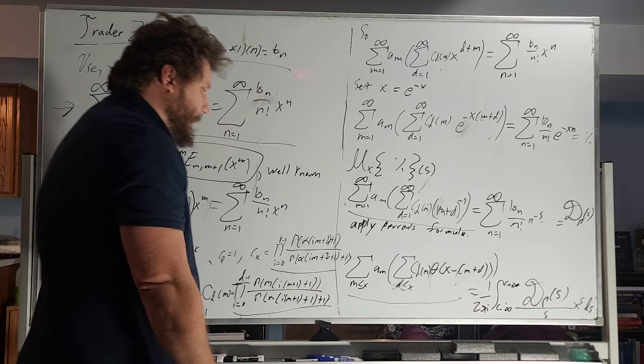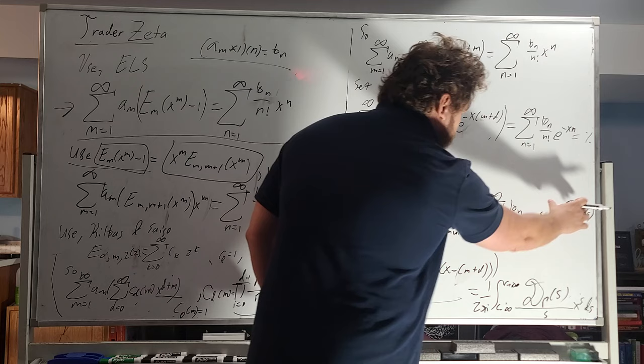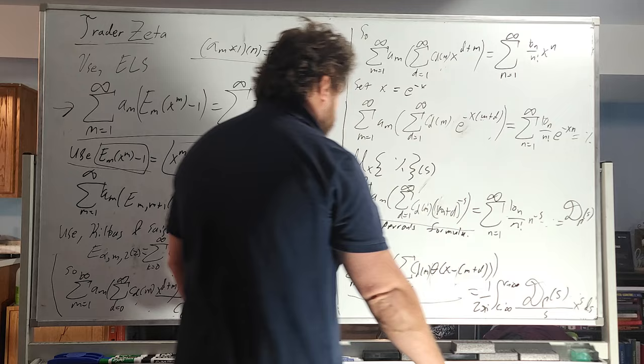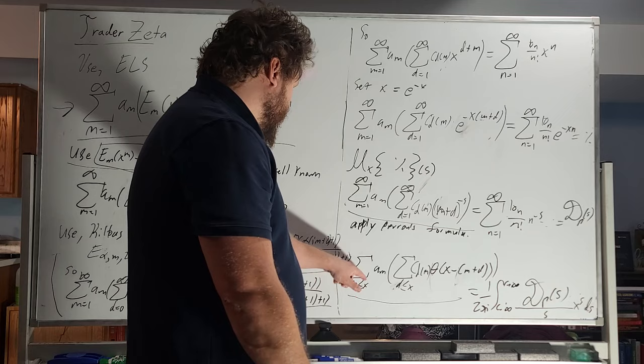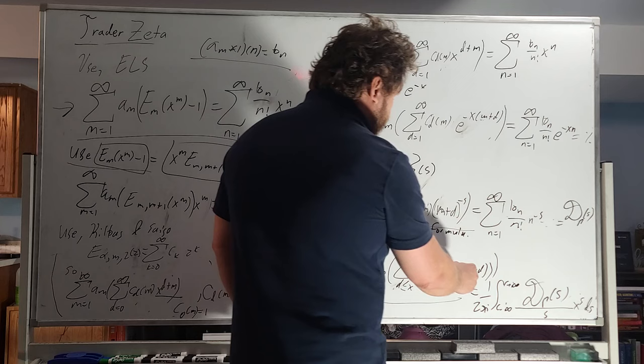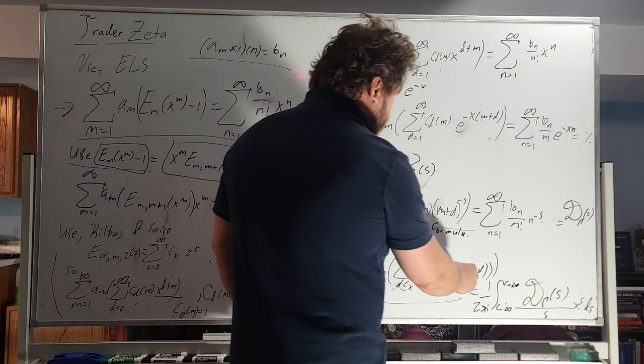Now we're going to use Perron's formula. And Perron's formula says, hey, look, if you put this complex, whatever, in this kind of integral setup, you will get these finite sums, right? So you get sum less than equal to x, a sub m. And oh, look, there's our term right there. And we have our theta of x minus m plus d, all in parentheses. And we are really good.